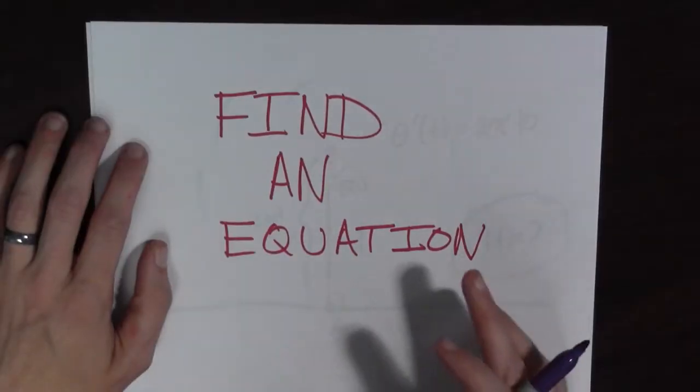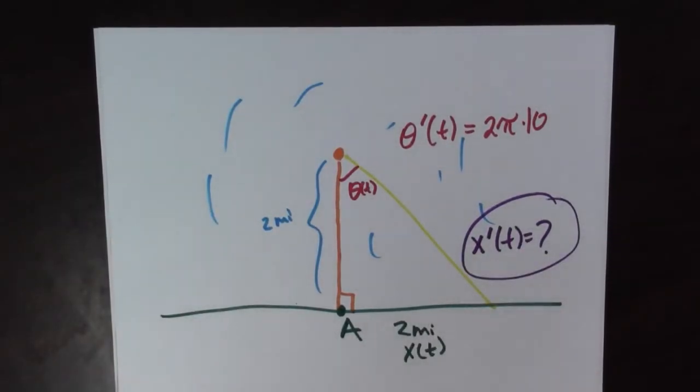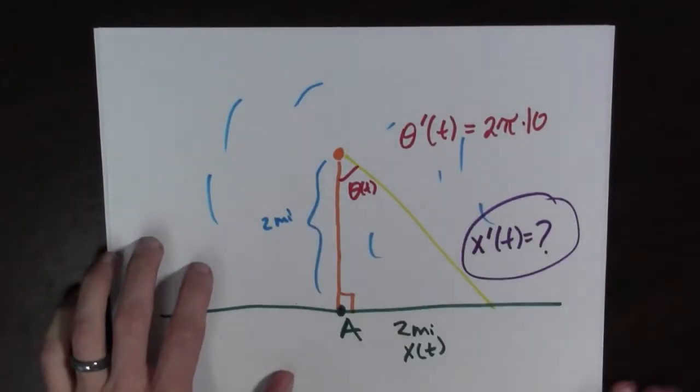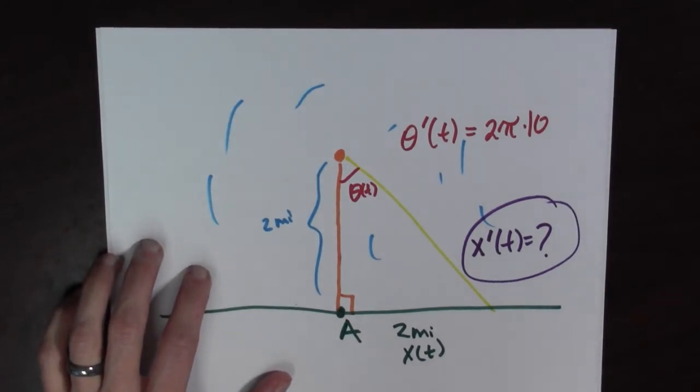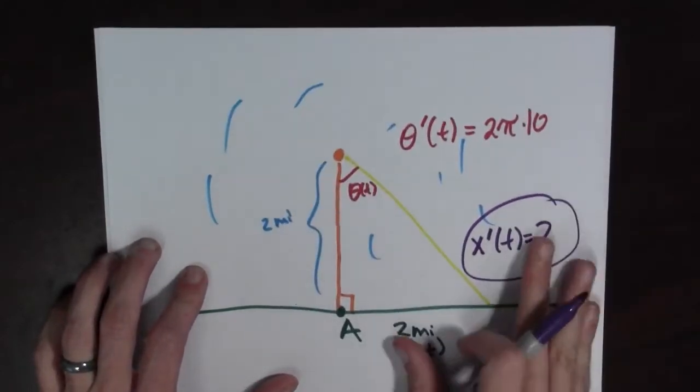Now that we have our picture, we should find an equation. So let's look at our picture. Here's our picture again and I see a right triangle here and I see a theta...